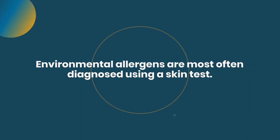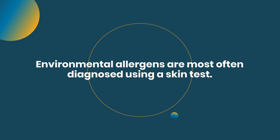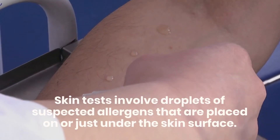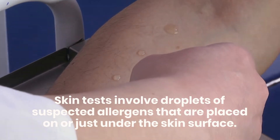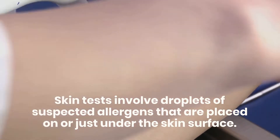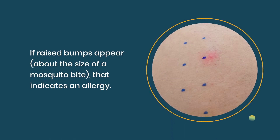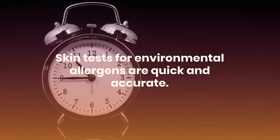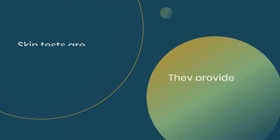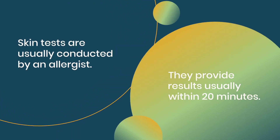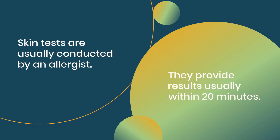Environmental allergens are most often diagnosed using skin tests. Skin tests involve droplets of suspected allergens that are placed on or just under the skin surface. If raised bumps appear about the size of a mosquito bite, that indicates an allergy. Skin tests for environmental allergens are quick and accurate. They are usually conducted by an allergist and provide results usually within 20 minutes.